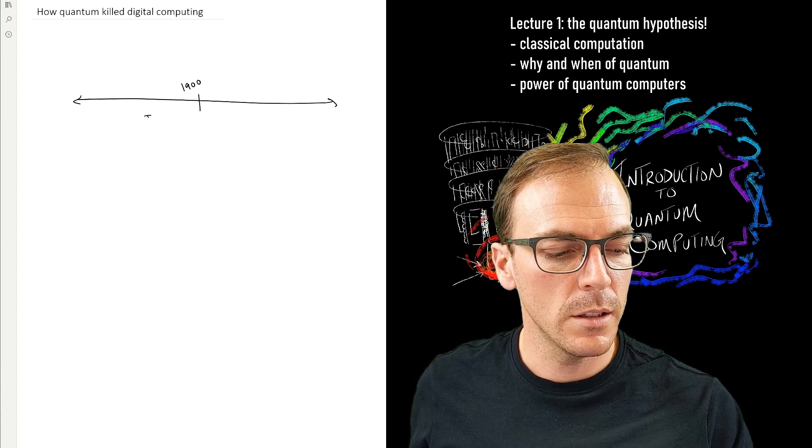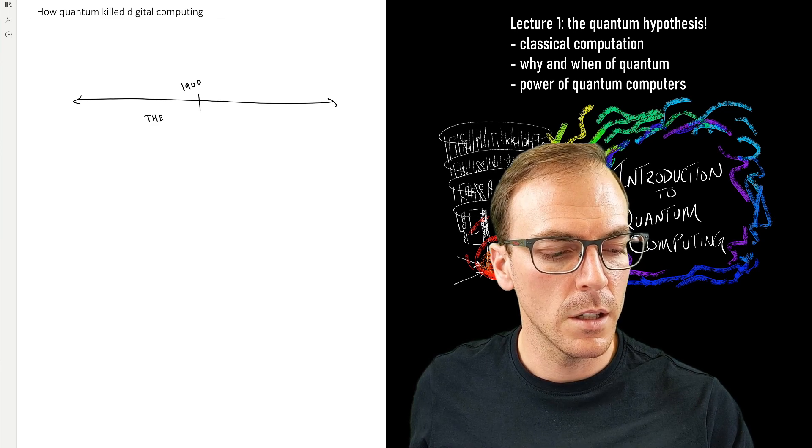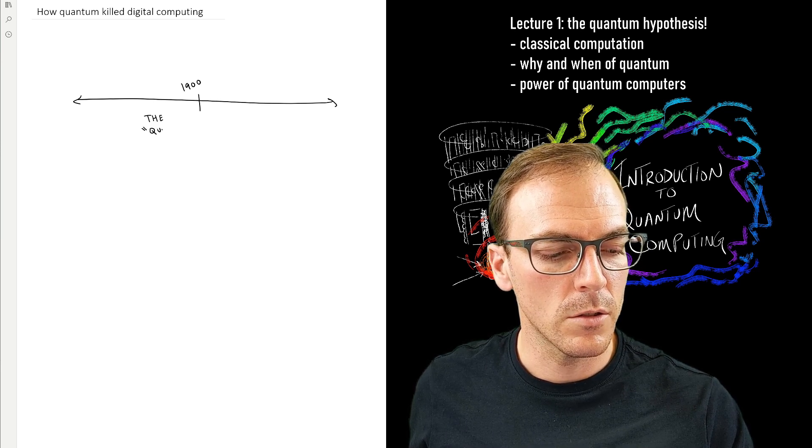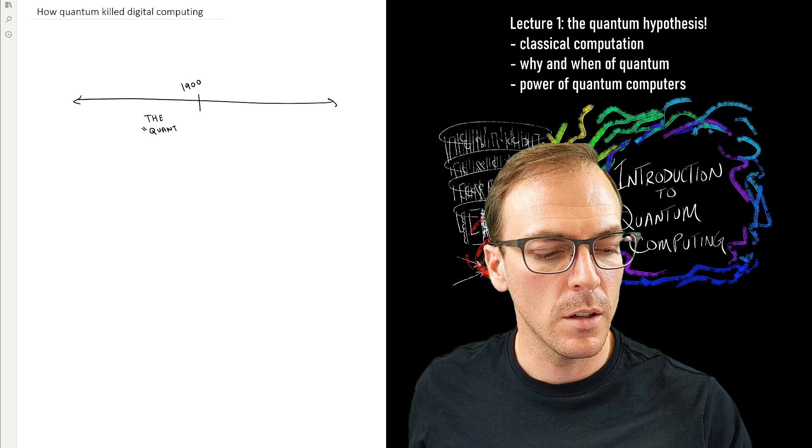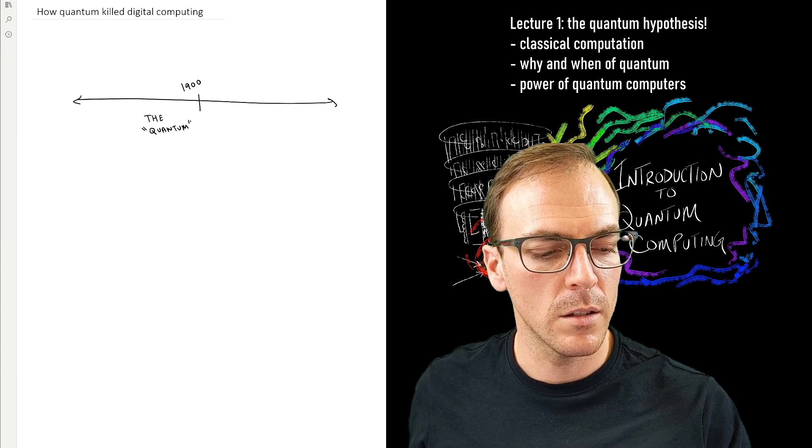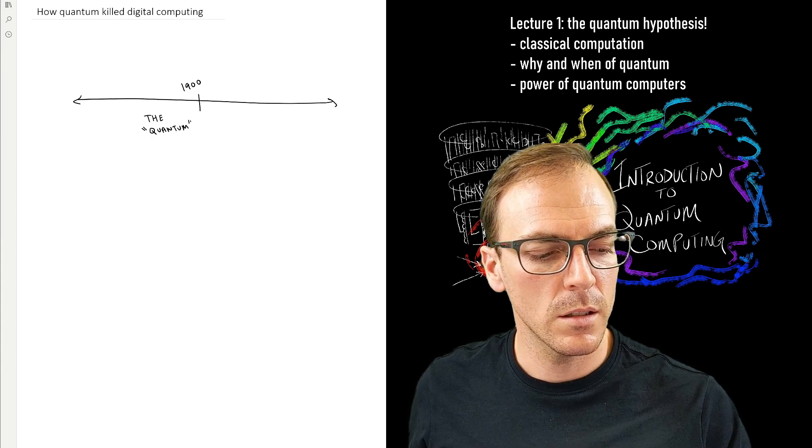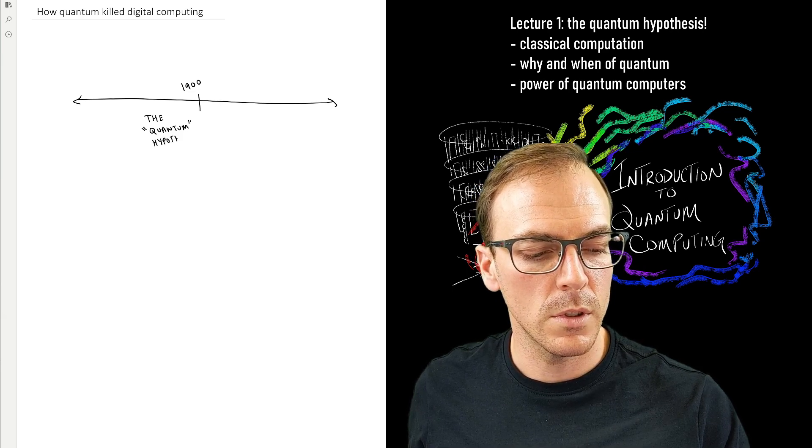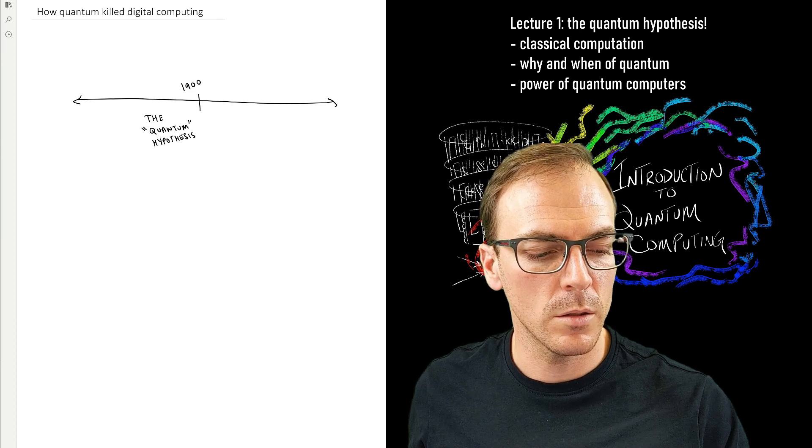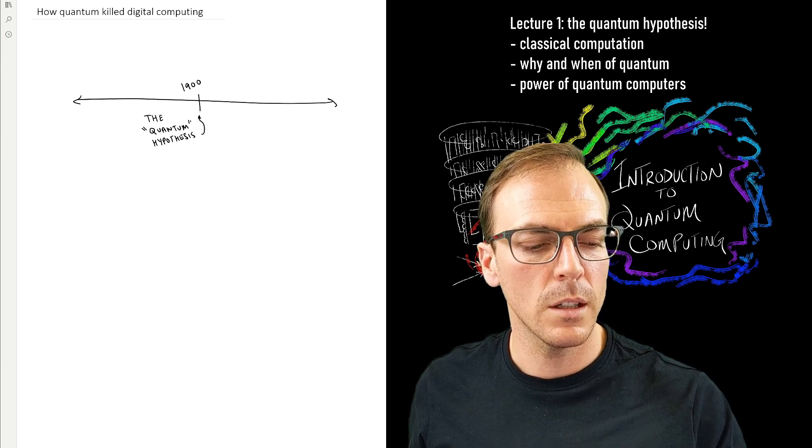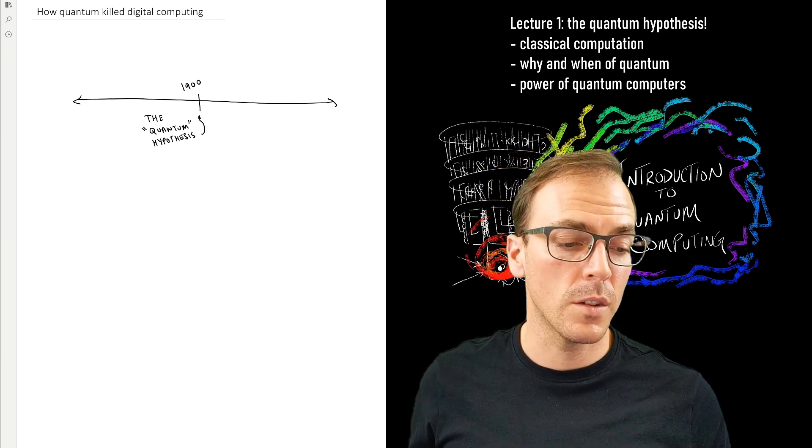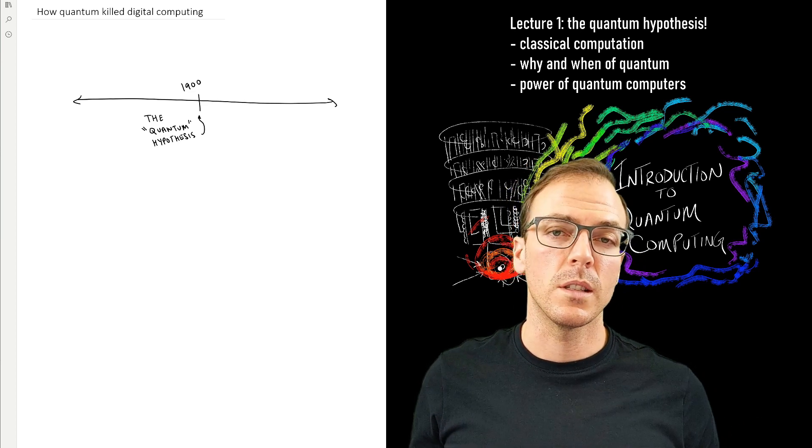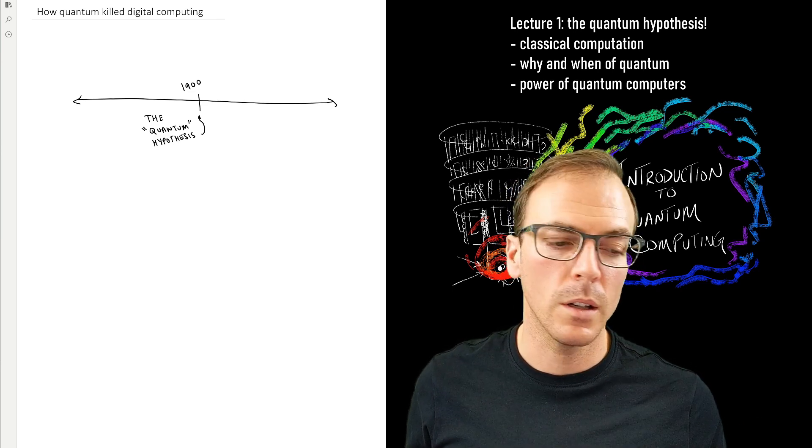So in 1900, scientists were trying to explain some new data that they were seeing, and they couldn't use what they could try to use, but it wasn't working. They were using the conventional physics of the time, which would be the physics of Newton and Maxwell and others.